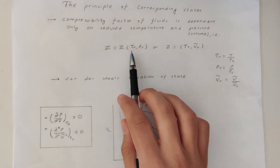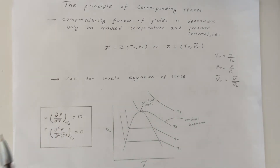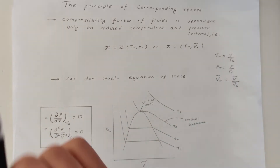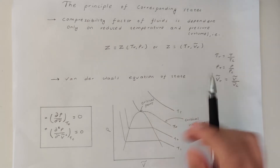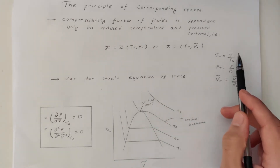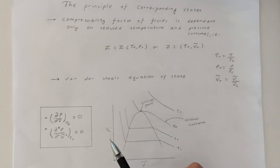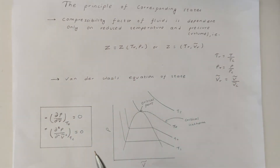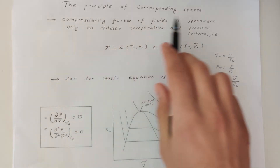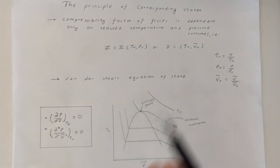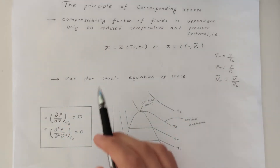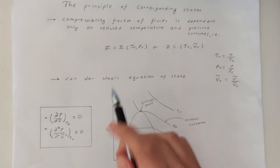Reduced temperature and reduced pressure measure how far we are from the critical conditions. Reduced temperature is defined as the ratio of the fluid's temperature to its critical temperature. Similarly, replacing temperature with pressure or molar volume gives reduced pressure and reduced molar volume. The van der Waals equation of state is related to this principle because it can be written in the form of compressibility factor involving reduced temperature and reduced pressure.